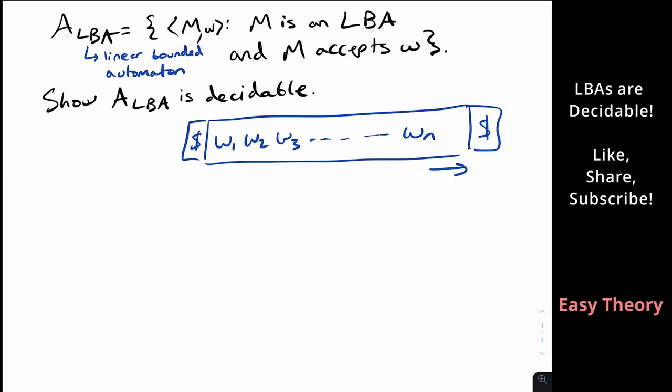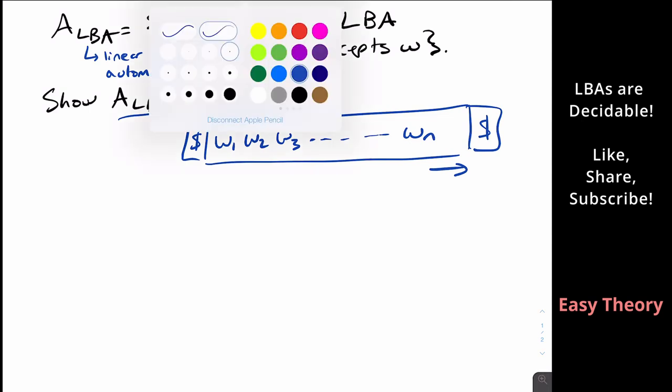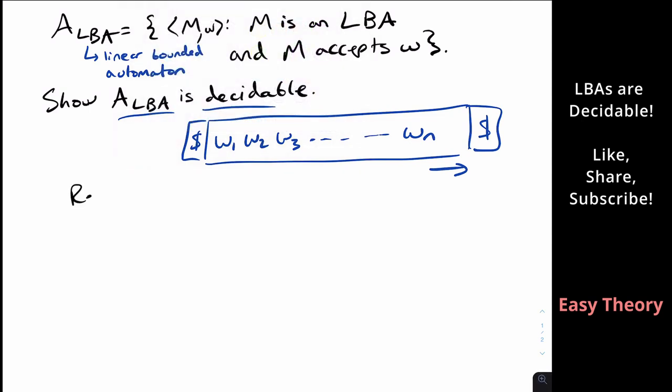So why is this decidable? So if you think about the recognizer for ATM, how was that proven? Well, what it did was simulate the Turing machine M on input w and accept if the machine accepts.